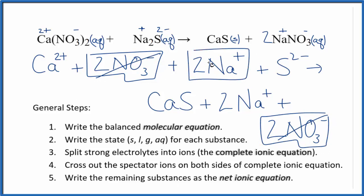Likewise, 2 sodium ions in the reactants, 2 in the products. Spectator ions, we cross those out. The result, what's left, that's the net ionic equation for Ca(NO3)2 plus Na2S. I'll clean this up and write the states.